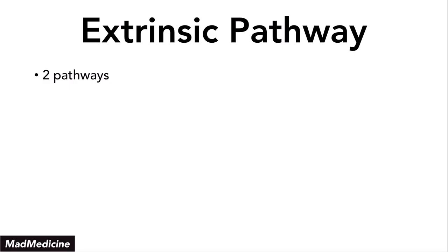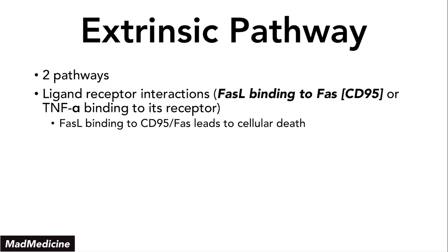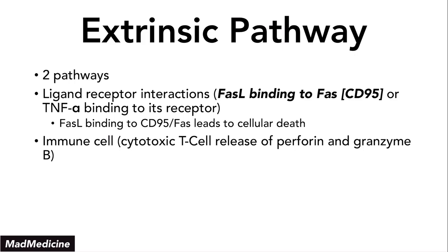The first sub-pathway is the ligand-receptor interactions, where you have the FAS ligand that binds to FAS, also known as CD95. You also have TNF-alpha binding to its receptor, and that will also lead to cell death. So FAS ligand binds to CD95, also known as FAS, and that will induce apoptosis. You can also see extrinsic apoptosis happening through immune cells, especially cytotoxic T cells, which release an enzyme called perforin and granzyme B.